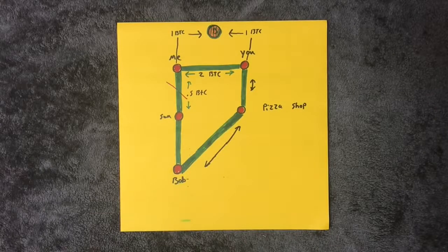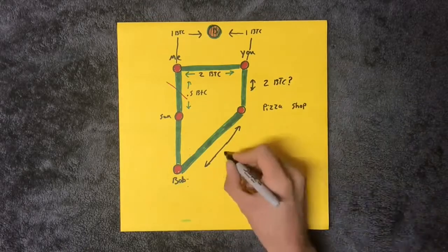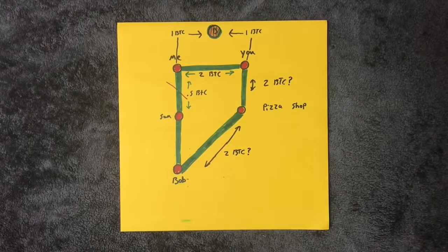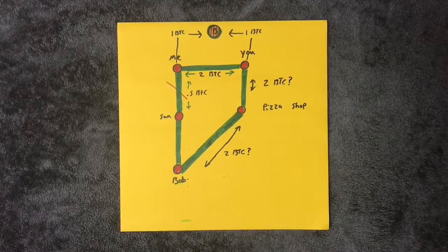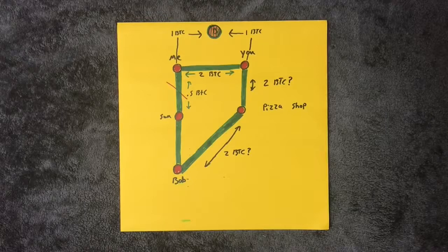A problem with the system is the requirement to preload every open channel you have ahead of time with what you assume will be the upper limit of your spending habits with that channel. It's more convenient to have one open channel and a large amount of Bitcoin to a well-connected party that consistently has more money than you, so you can always route through. This is why hubs will naturally occur.